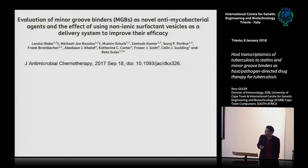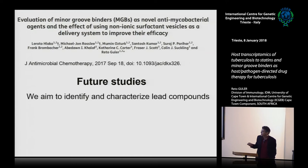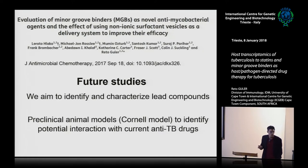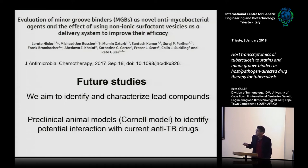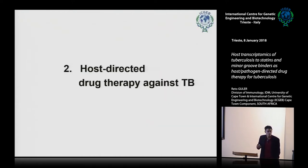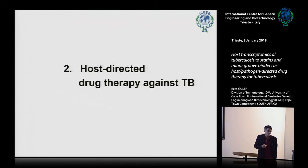We want to take this further because we identified these hit compounds. We want to go into lead characterization using animal models in vivo, using the Cornell or reactivation model with current anti-TB drugs. That was the first part of my talk — developing new drugs against TB. The second part is about increasing host resistance: finding factors in the host that TB targets and that allow TB to develop resistance and persistence, particularly looking at macrophages and host-directed therapy for TB.